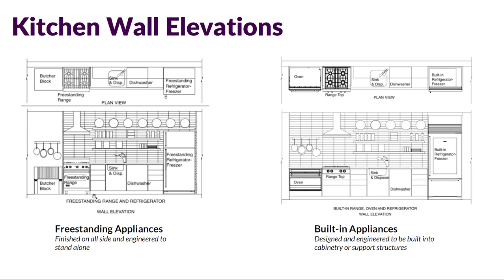This is what most people have — a freestanding refrigerator that could easily be pulled out and replaced, just leaving an opening, as well as a range with combined oven and cooktop surface that's freestanding and can be easily pulled out and replaced. The idea with freestanding appliances is that they're finished on all sides and engineered to stand alone — they're simply meant to sit there.